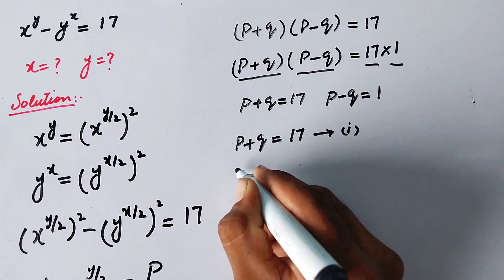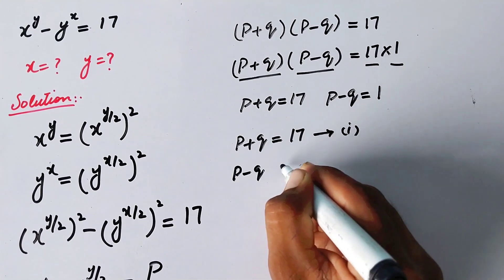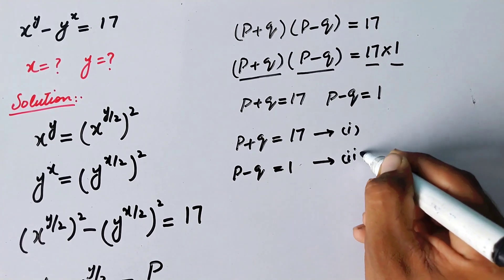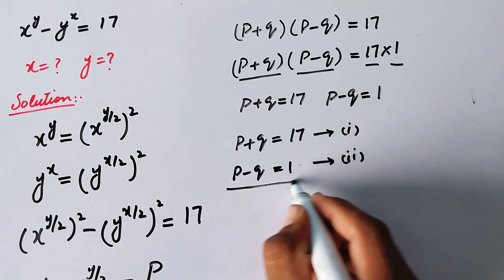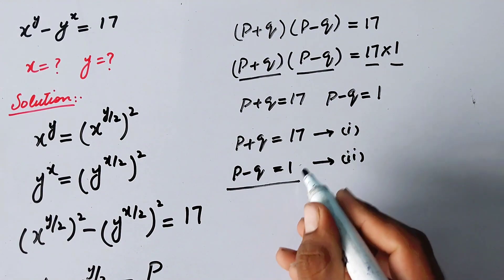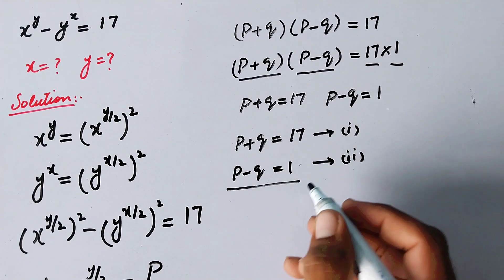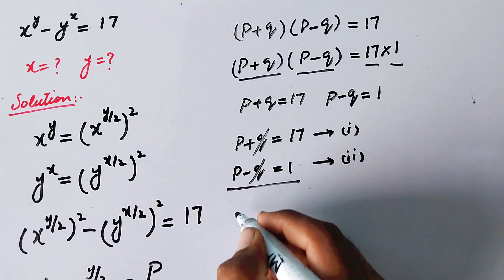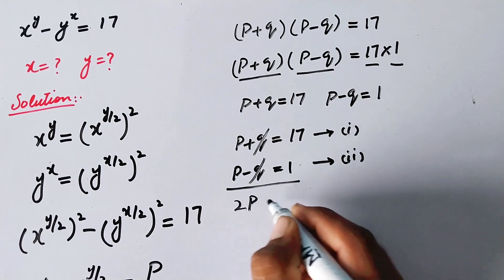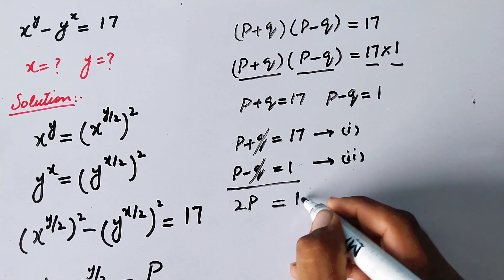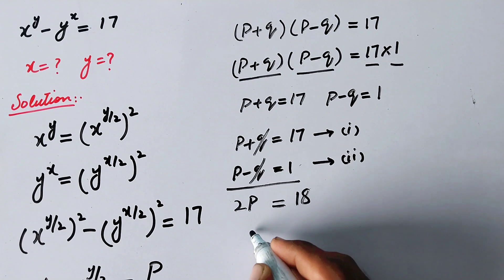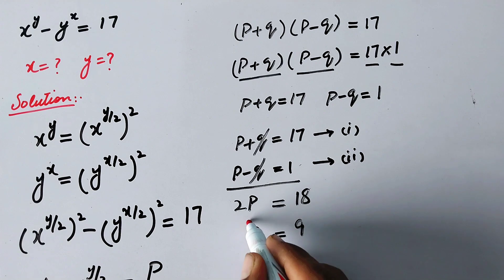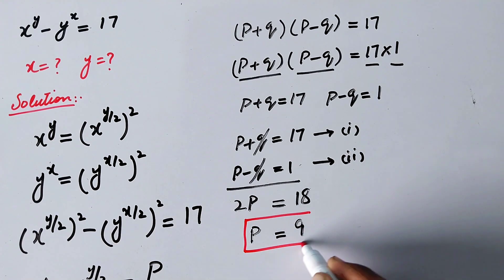We label these as equation 1: P+Q = 17, and equation 2: P−Q = 1. Adding both equations, +Q and −Q cancel each other, giving 2P = 18, so P = 9.